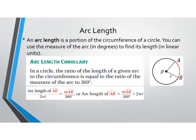Next is the arc length. An arc length is the portion of the circumference of a circle. You can use the measure of the arc to find its length. The length of the arc is in linear units — like inches, centimeters, meters. The arc length corollary states that in a circle, the ratio of the length of the given arc to the circumference is equal to the ratio of the measure of the arc to 360.